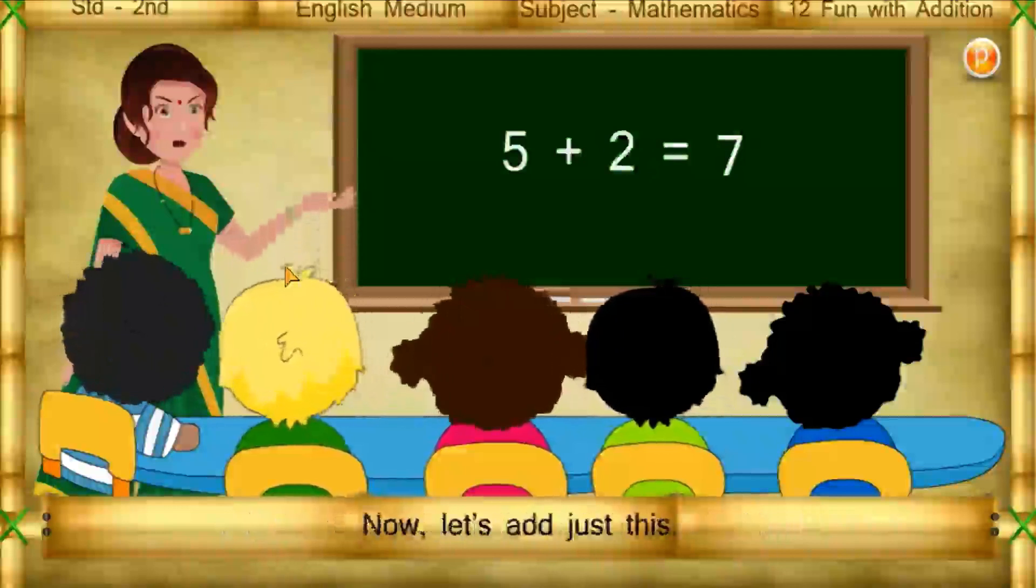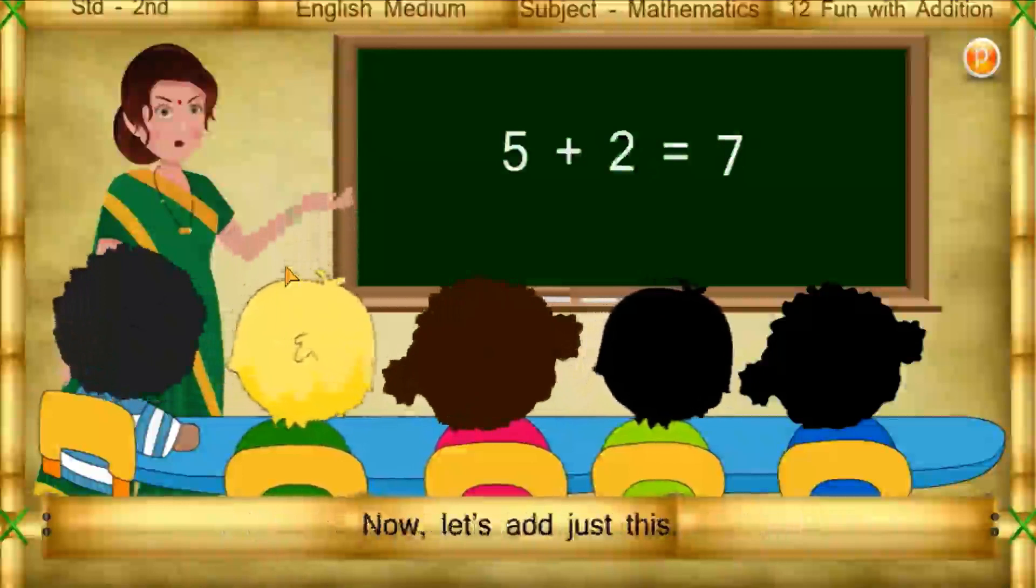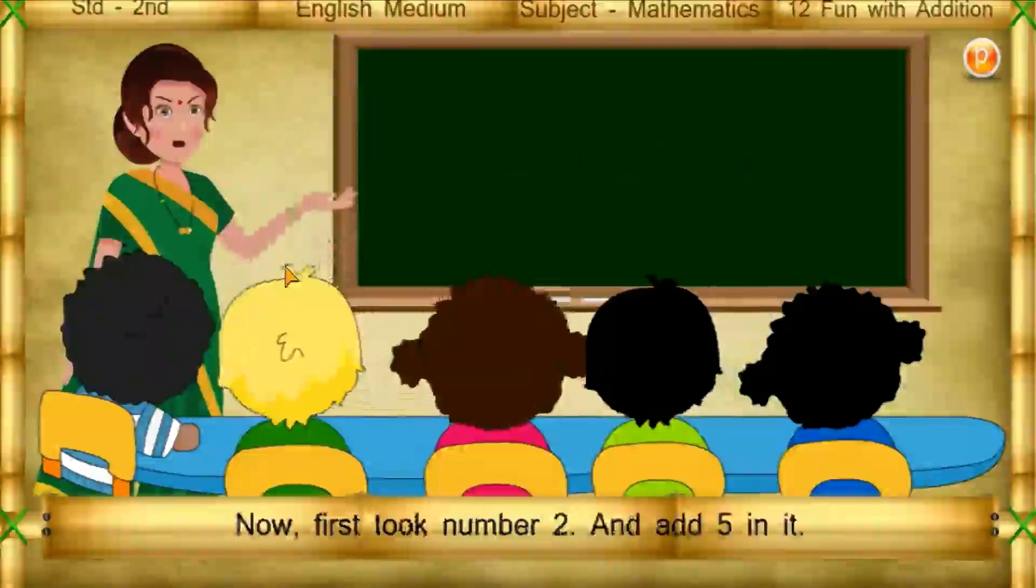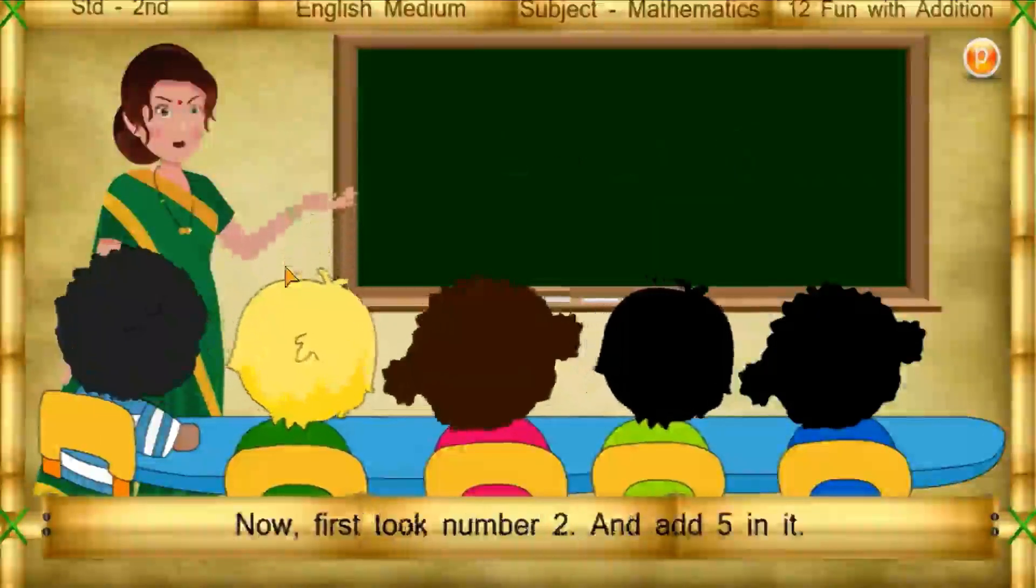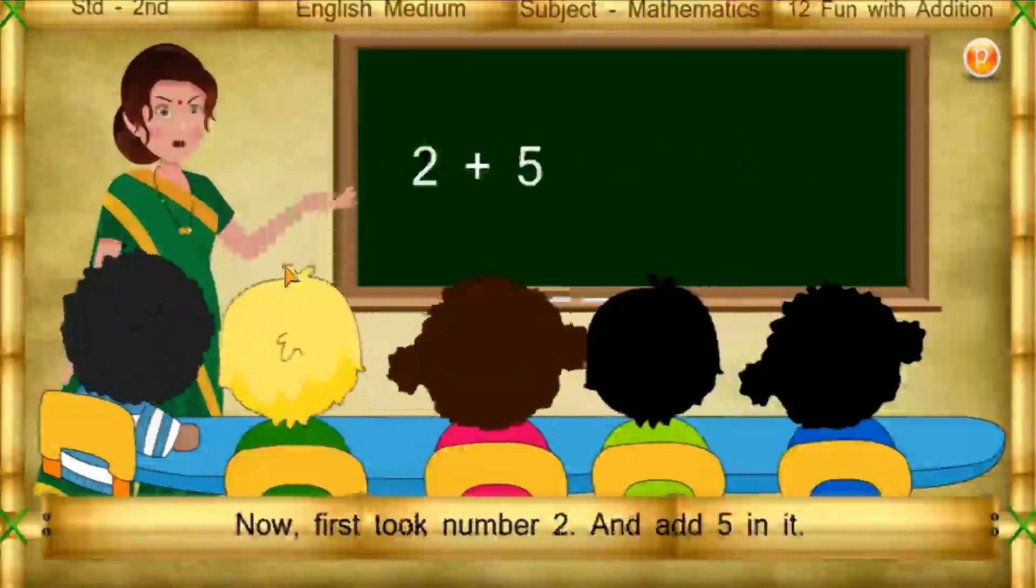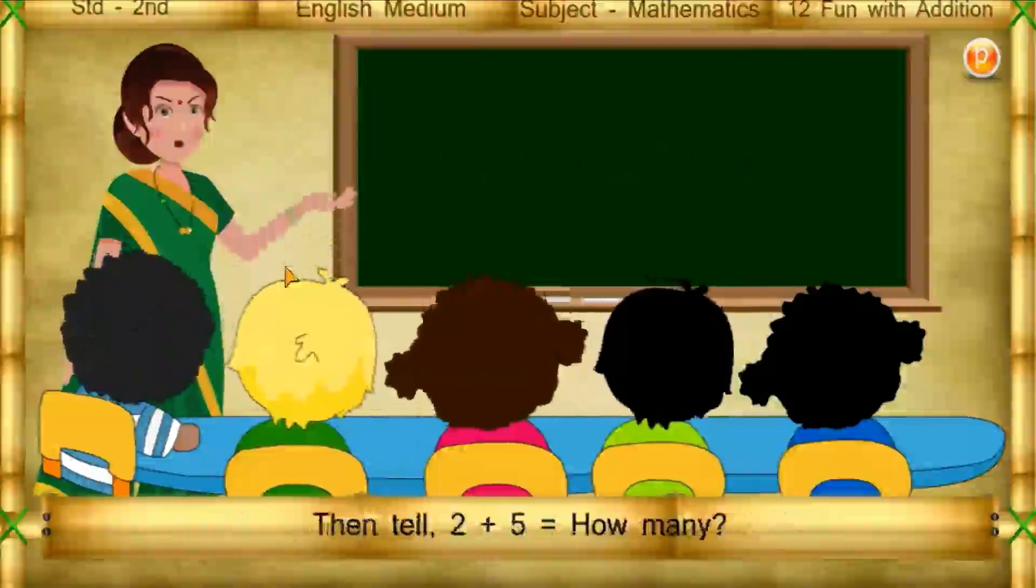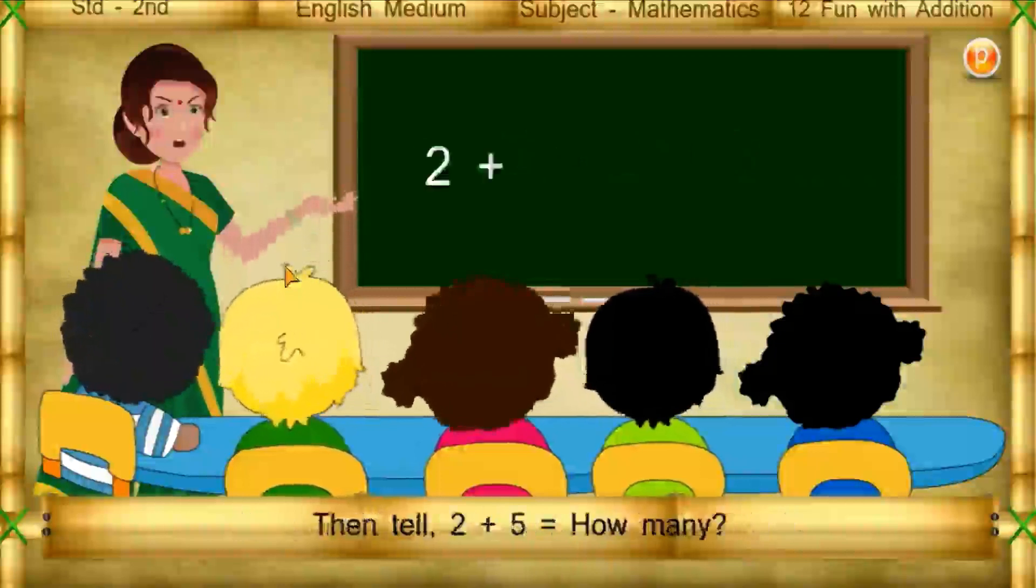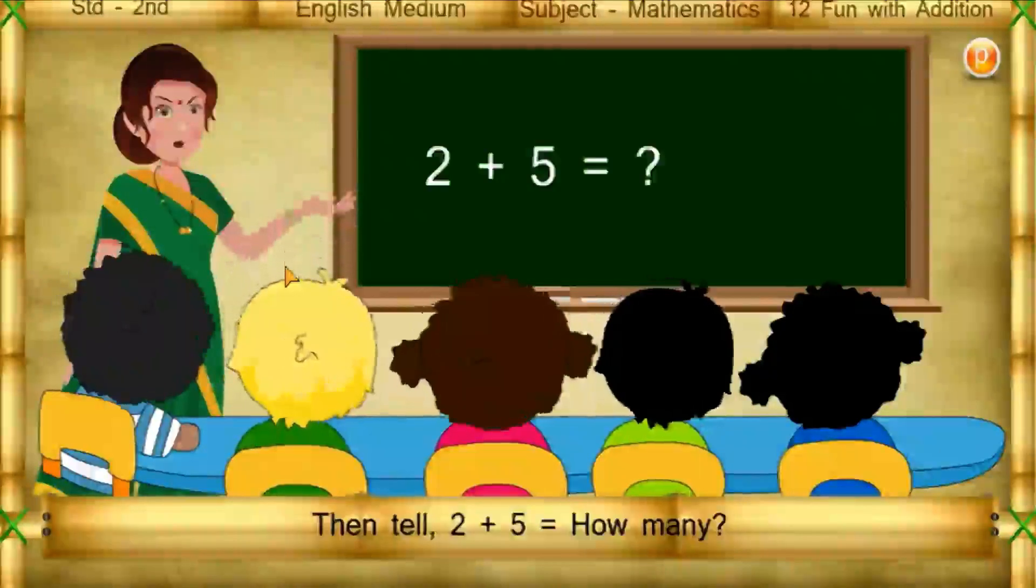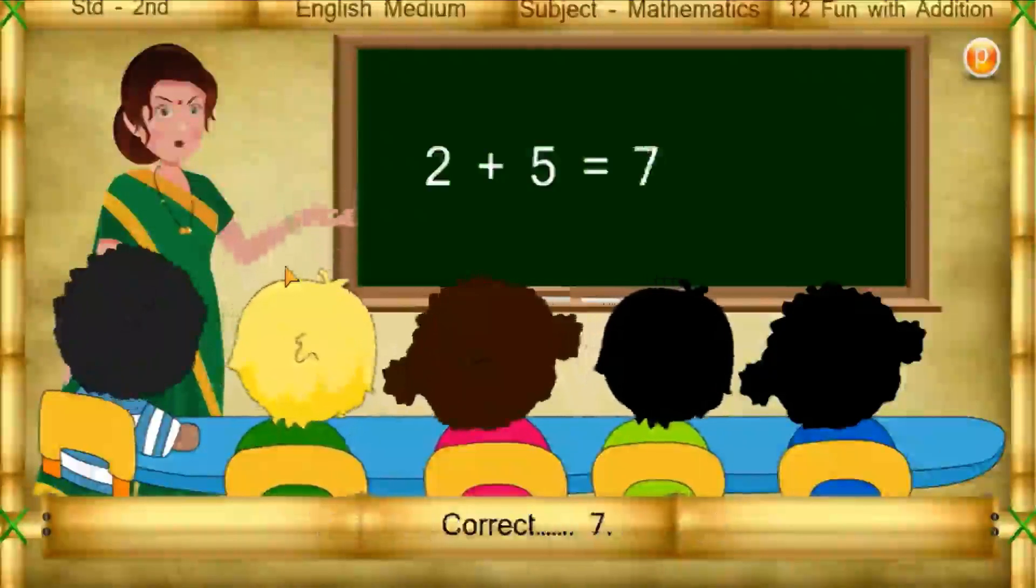Now let's add just this. Now first look at number 2 and add 5 in it. Then tell, 2 plus 5 is equal to how many? Correct, 7.